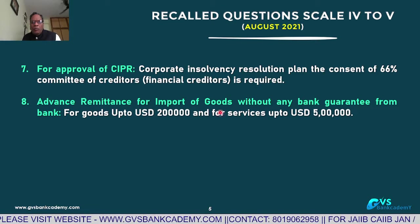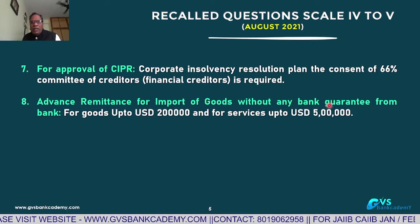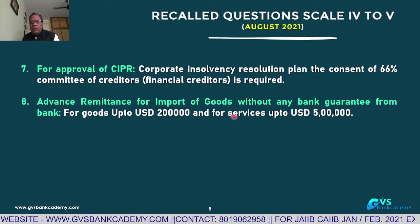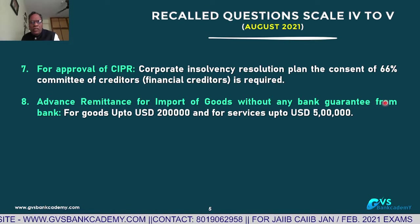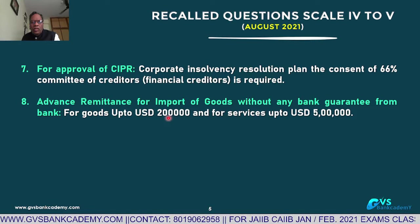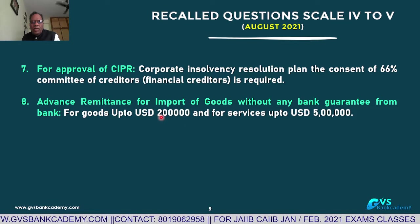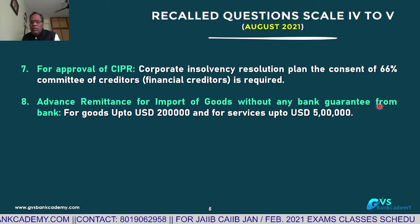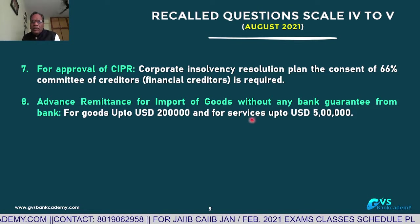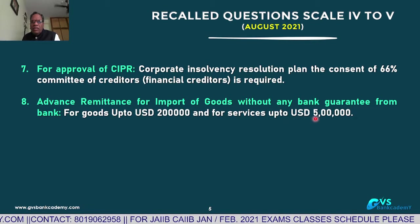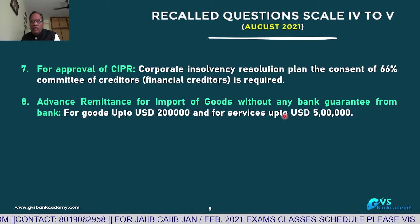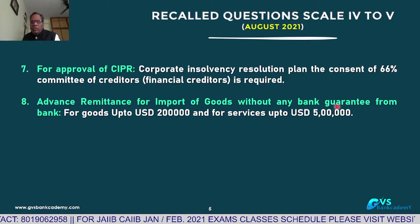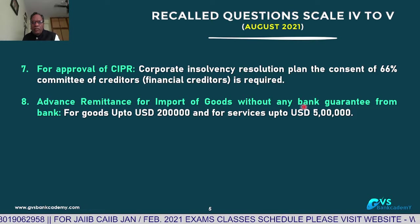Q8: Advance Remittance for Import of Goods without any Bank Guarantee. An importer can remit advance without any guarantee or security: for goods up to US$2 lakh, without any bank guarantee from domestic or internationally accepted organizations; and for services up to US$5 lakh, without any bank guarantee. This is a very important question.